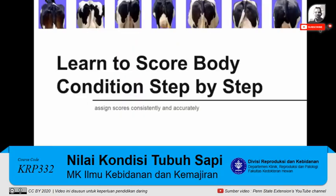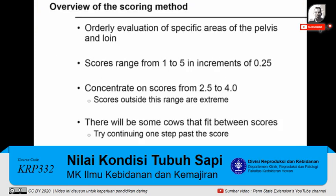The following is a step-by-step guide to help you learn to assign body condition scores for dairy cows, based on the process described by Ferguson and coworkers in 1994. Scorers using this method will be able to assign body condition scores consistently and accurately. This system will teach you to evaluate specific areas of the pelvis and loin in an orderly fashion.